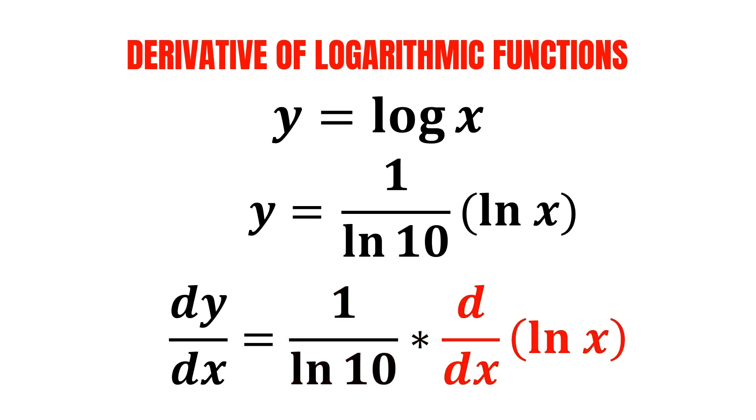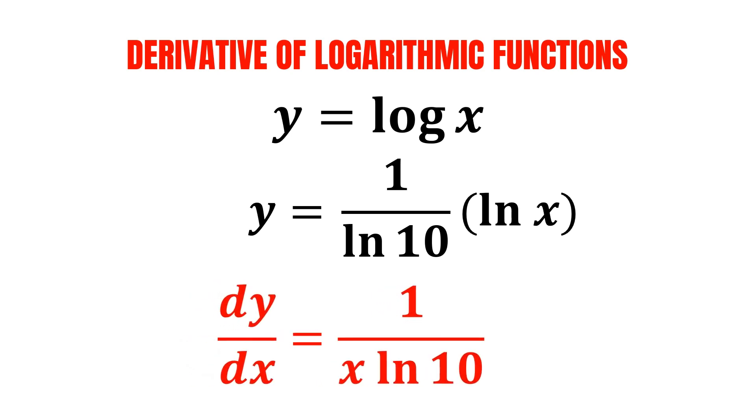Now, we just have to find the derivative of this ln x, and we know that it is equal to 1 over x. All we have left to do now is to multiply these two terms together, in which we will be getting 1 over x multiplied by the natural log of 10.